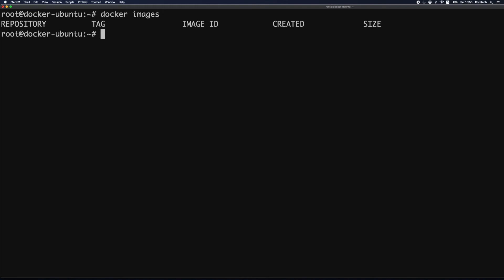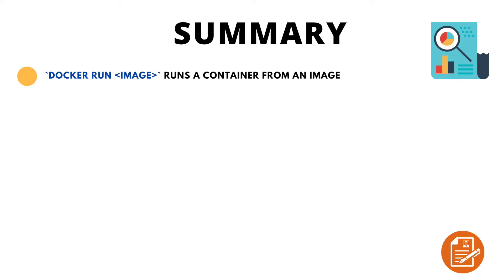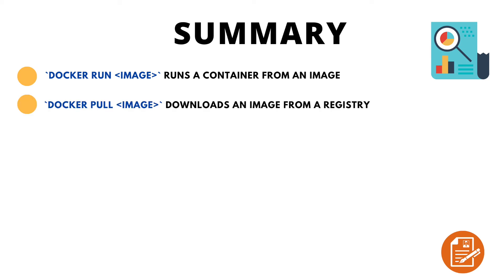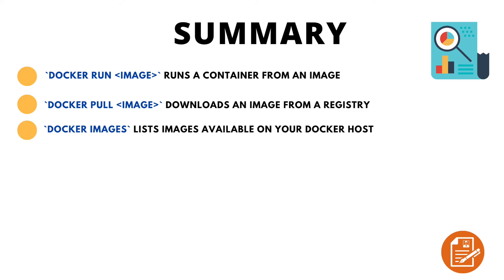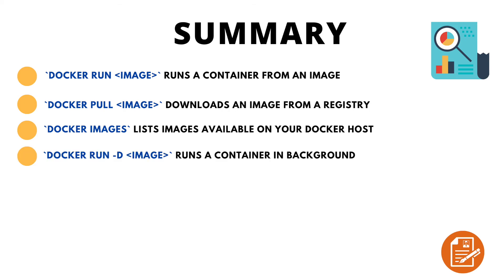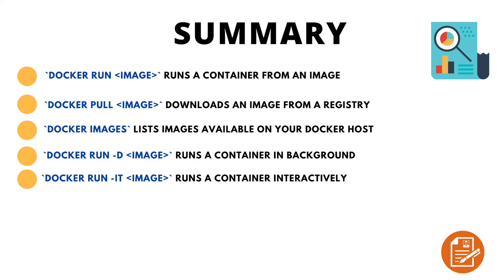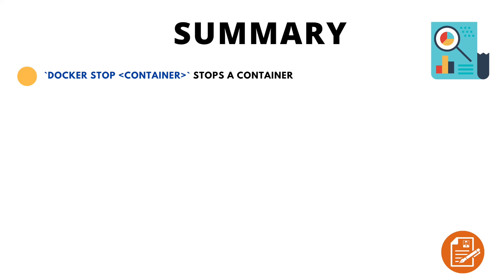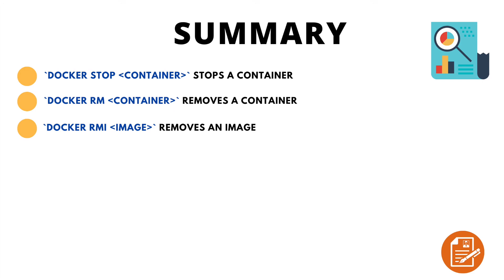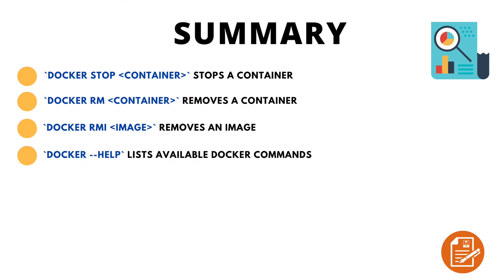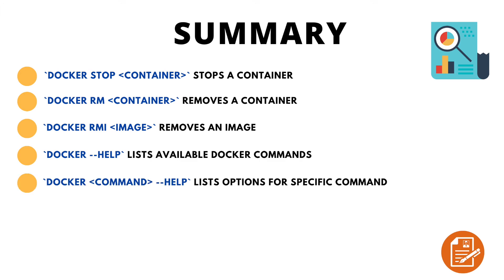To sum up: docker run runs a container from an image; docker pull downloads an image from Docker Hub without running it; docker images lists available images locally; docker run -d runs a container in detached mode; docker run -it runs a container in interactive mode; docker stop stops a container; docker rm removes a container; and docker rmi removes an image. Use docker --help or docker [command] --help for available options.